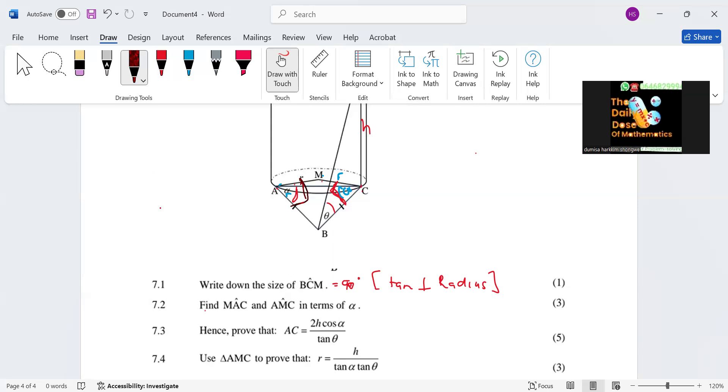We can tell them that even BAM, this is going to be equal to 90. Therefore, angle MAC is equal to 90 minus alpha over 2. Next they say they want this one here, AMC. So I'm going to tell them that ACM is equal to MAC.